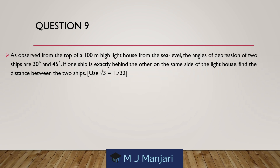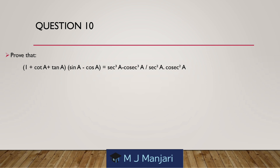Question 9. As observed from the top of a 100 m high lighthouse from the sea level, the angles of depression of two ships are 30 degrees and 45 degrees. If one ship is exactly behind the other on the same side of the lighthouse, find the distance between the two ships. Use root 3 is equal to 1.732.